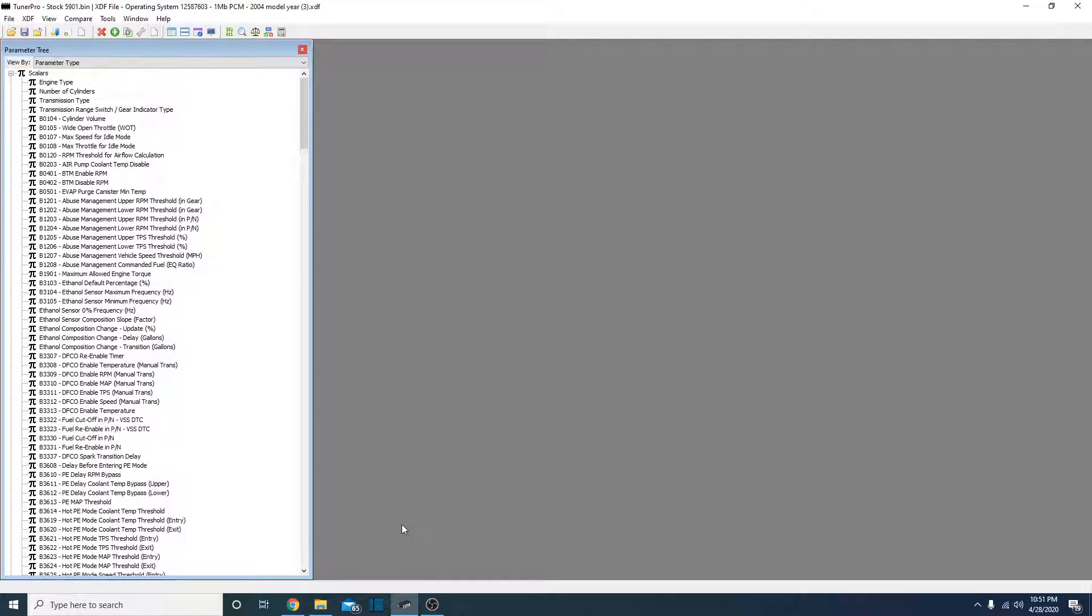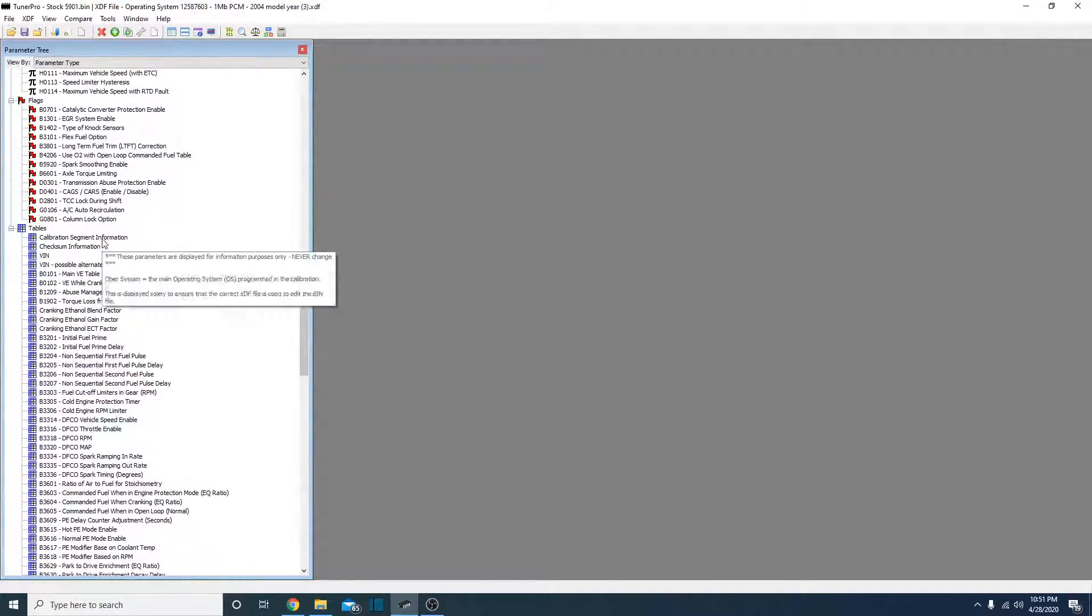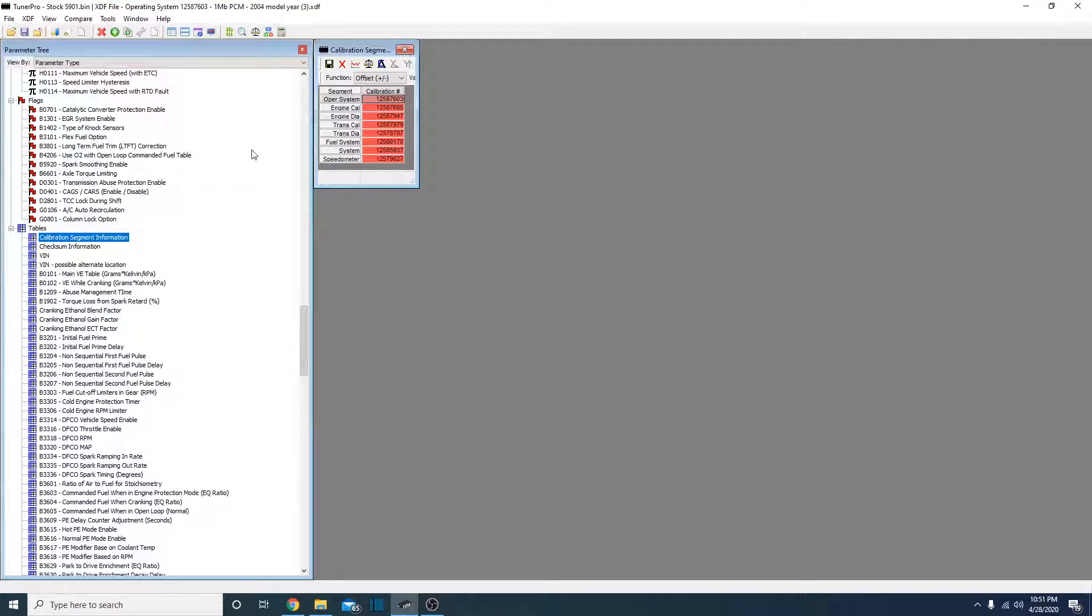Let's go ahead and get onto the computer here. Now that we've downloaded our dump from our PCM onto our cell phone, connect the cell phone to the computer, pull it off. Your phone may be different, just put it in a folder.